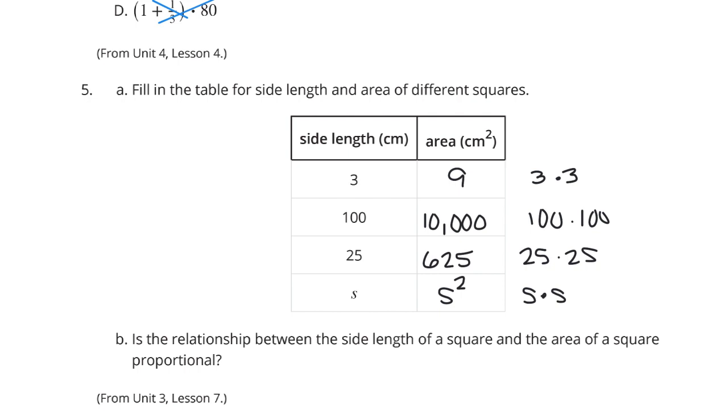And lastly, in this lesson, is the relationship between the side length of a square and the area of a square proportional? Well, if we take 3 and divide it by 9, we get one-third. So, when I take 100 and divide it by 10,000, I would need that to be one-third for it to be proportional. It's not one-third. It's one-one-hundredth. And so, no, it's not proportional.